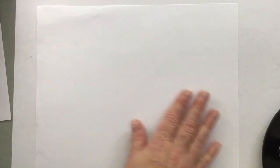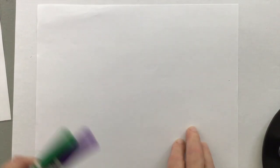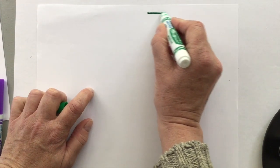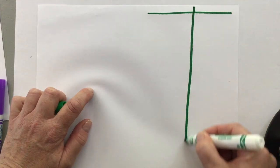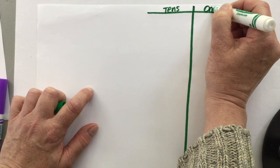The place value board that we're going to make today is going to have two tens and ones spaces. One is going to be where we build it and the other is going to be where we have our numbers. So what you're going to do is you're going to make two place value spaces with your tens and ones.